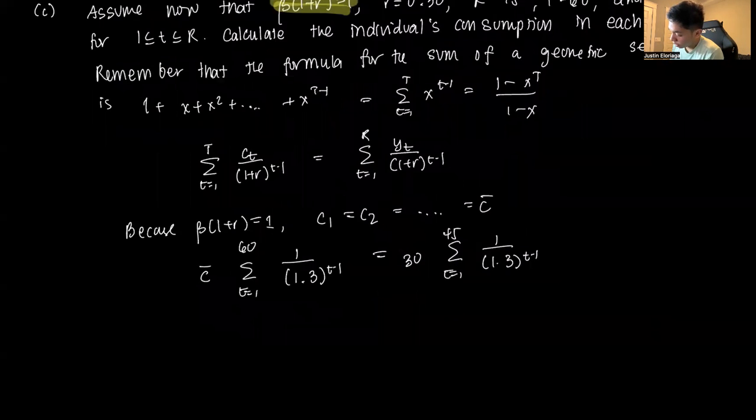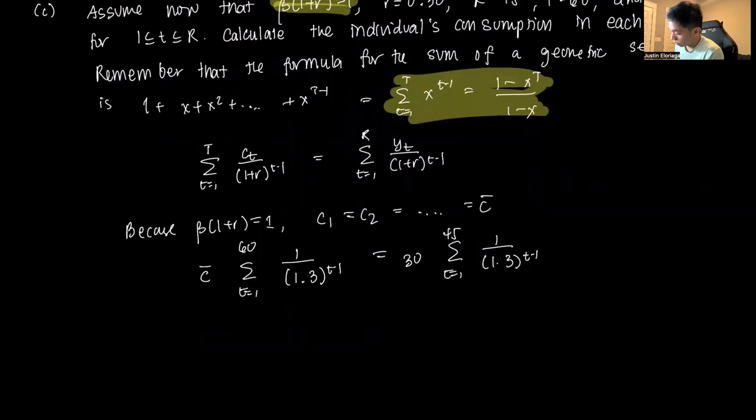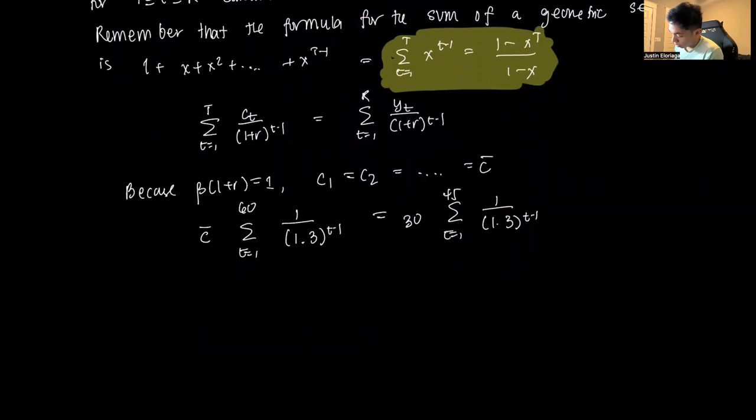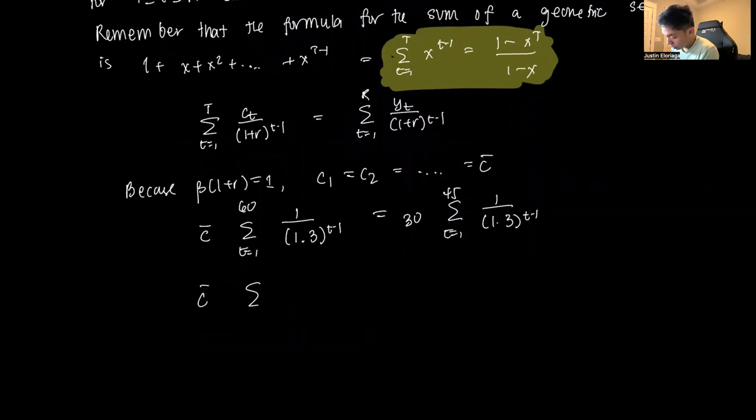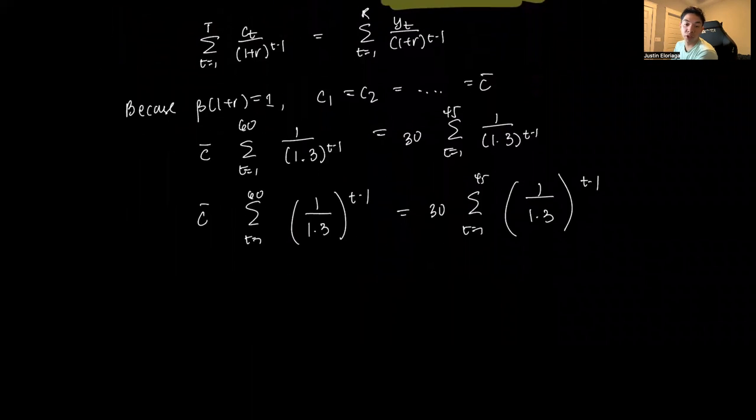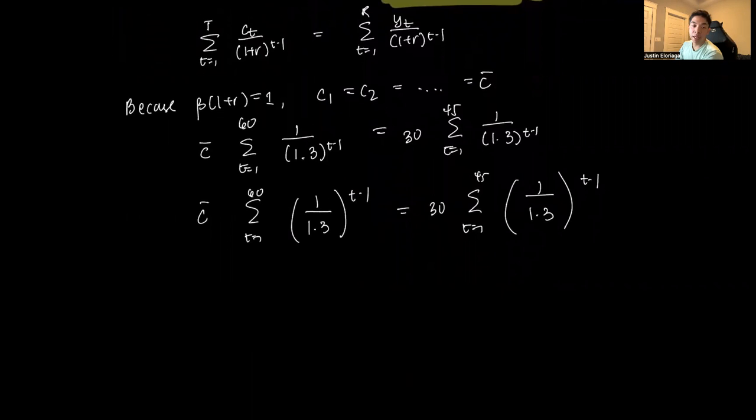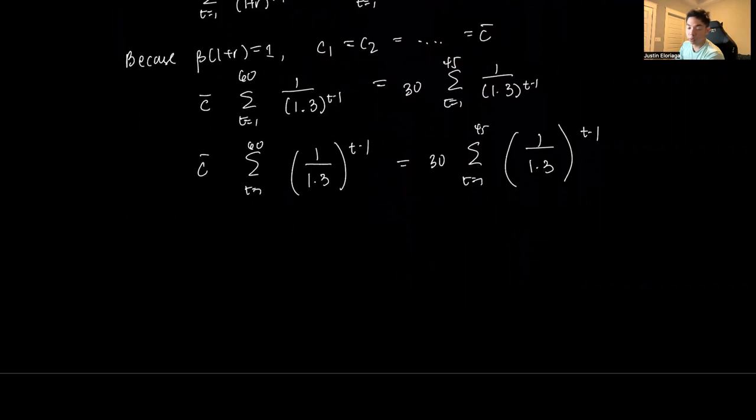This equals sum from t=1 to 60 where Yt=30 of 1/(1.3)^(t-1). Capital T is 60, and this goes up to 45. I can rewrite 1 to 60 as (1/1.3)^(t-1) - the result won't change since 1 raised to anything is 1. Then 30 times sum from t=1 to 45 of (1/1.3)^(t-1).